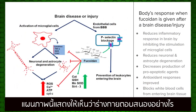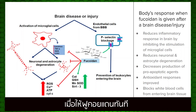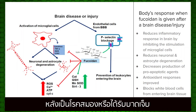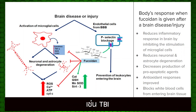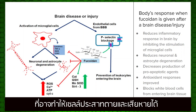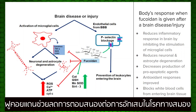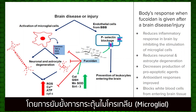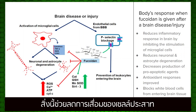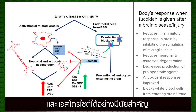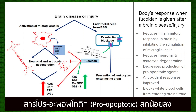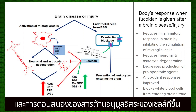This diagram shows how the body responds when Fucoidan is administered immediately after a brain disease or injury such as a TBI. A TBI, or traumatic brain injury, can cause neuronal death, damage, and further complications. Fucoidan reduces the inflammatory response in brain diseases by inhibiting microglial activation, which significantly decreases neuronal and astrocyte degeneration because production of pro-apoptotic agents is diminished and antioxidant responses of the cell are improved.